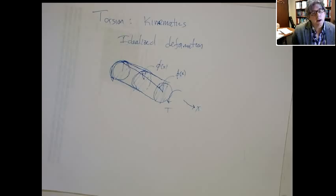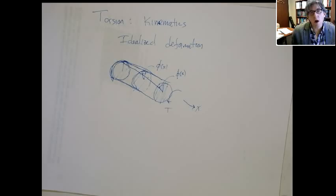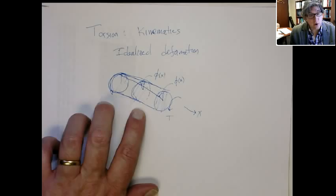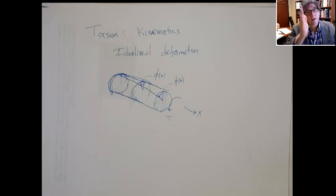Now, that angle of twist — if you want to think in terms of analogous quantities with respect to axial deformation — that's like the displacement. So it doesn't really directly measure the amount of strain or the amount of distortion. It's more related to the integral of that, how much deflection there is. The deflection effect is the amount that the disc rotates at phi. So again, that's not really the strain.